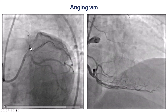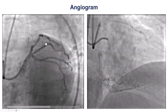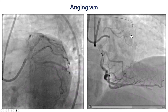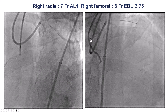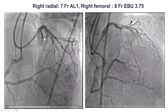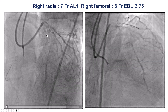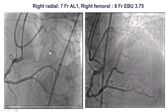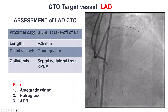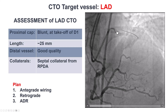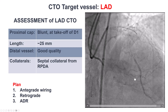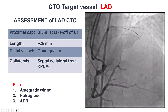The LAD was occluded right after the takeoff of a large diagonal branch. It had a blunt proximal cap, and there were some septal collaterals filling the mid and distal LAD. These are different views obtained with femoral and radial access. Again, we have a blunt but well-defined proximal cap, then the occlusion, and some diffuse disease into the mid LAD. We have a length of about 25 mm, good quality distal vessel, and septal collaterals from the PDA.